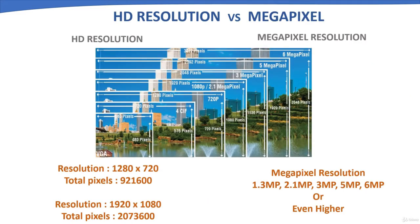SD resolution versus megapixel resolution: HD refers to cameras with standardized resolution of 720p or 1080p, where the numbers refer to the horizontal resolution. A 720p HD-ready camera provides images that are 1280 x 720 pixels, which is about 921,600 pixels. HD video format uses an aspect ratio of 16:9 and a frame rate standardized at 60, 50, 30, or 25 frames per second.